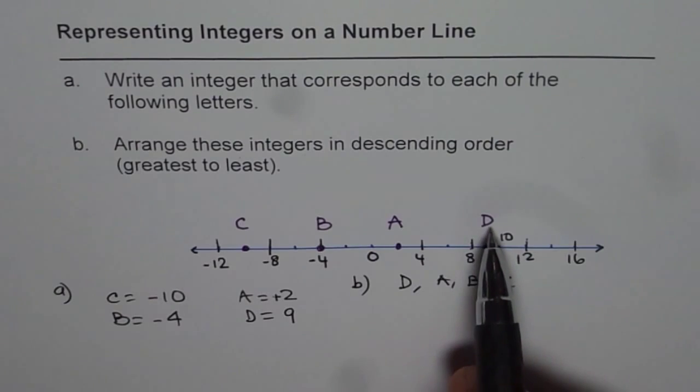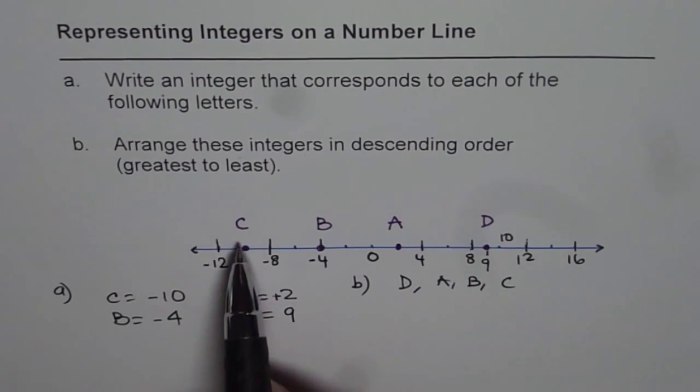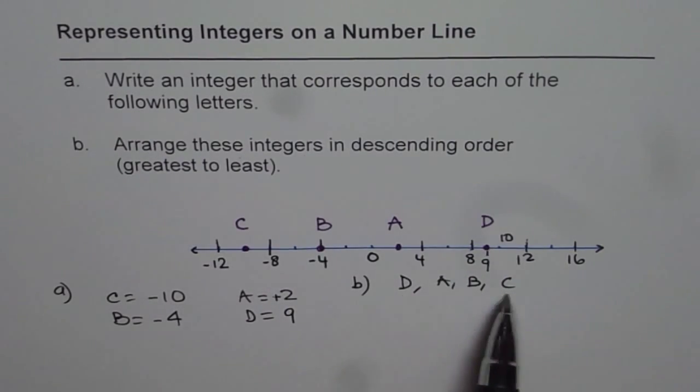So these numbers, numbers on the right are greater than the numbers on the left. So the rightmost will be the greatest and the leftmost will be the least. So that gives you the order.